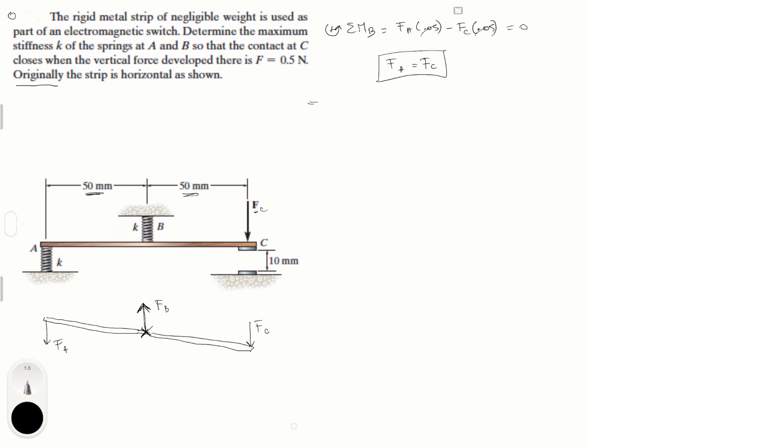Now, if we do the sum of the forces of Y, we can find another relationship which is that F of A minus F of C minus F of B is equal to zero. Okay, but you know that F of C is also equals to 0.5 newtons actually. So we know F of A already because we have that F of C is 0.5 newtons given right here.